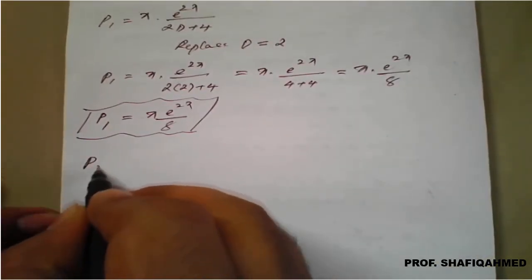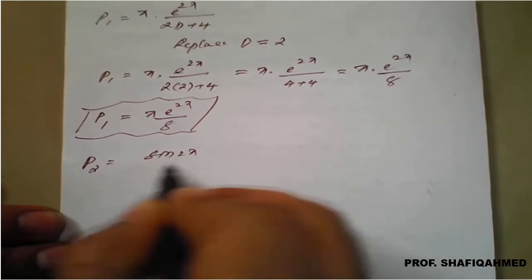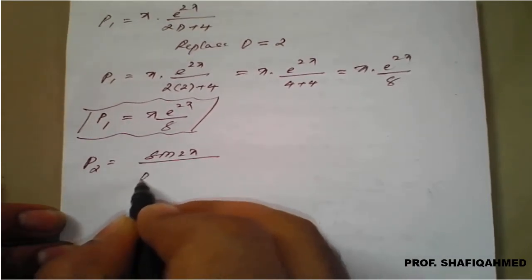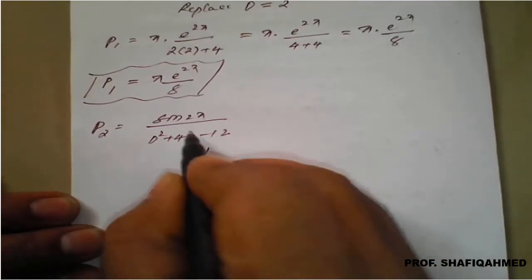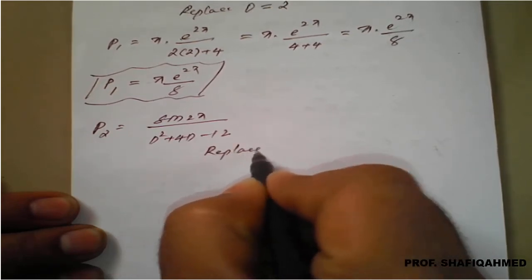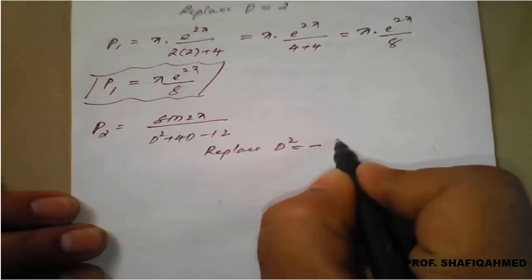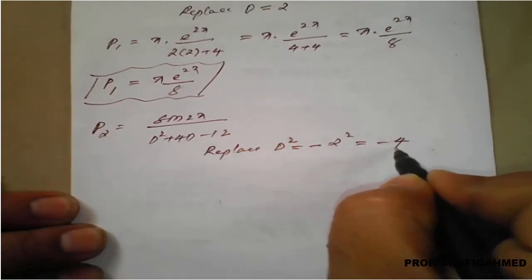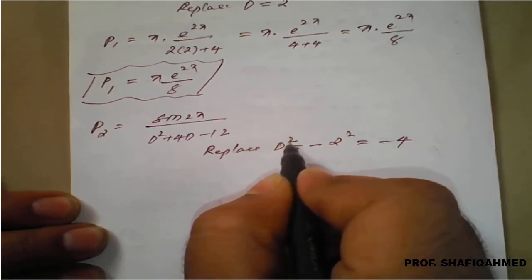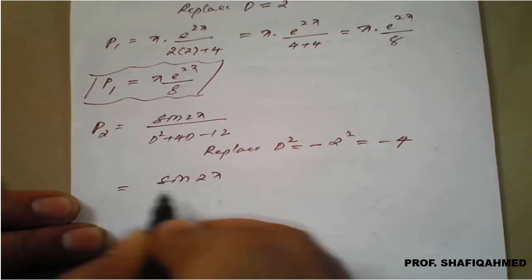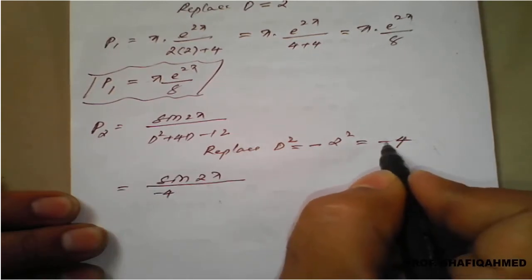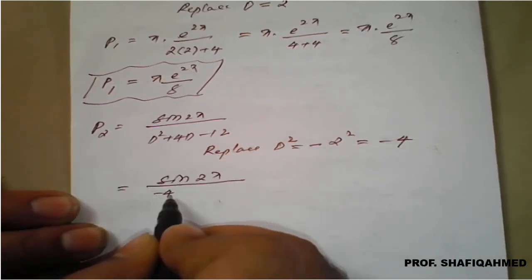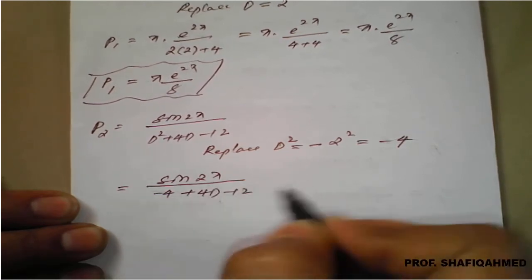Now, what is p2? p2 is sin of 2x divided by d squared plus 4d minus 12. This is type 2. So replace d squared equal to minus times 2 squared, which is minus 4. Substituting: sin of 2x divided by minus 4 plus 4d minus 12. Simplify: this becomes sin of 2x divided by 4d minus 16.